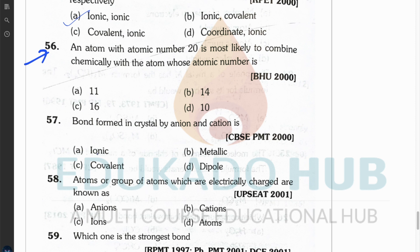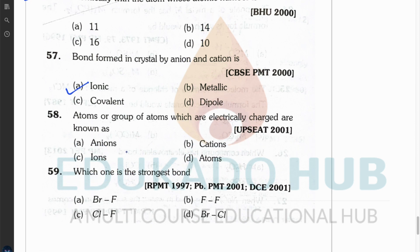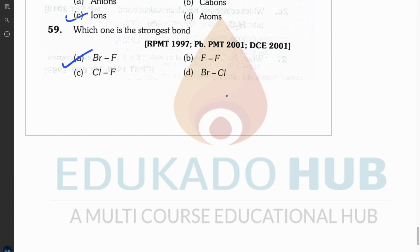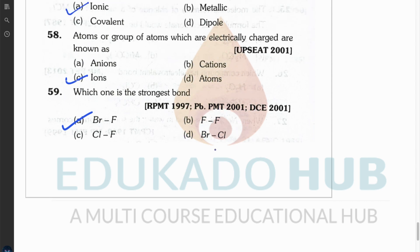Question fifty-seven: bond formed in a crystal between cation and anion — you know the answer. Question fifty-eight: atoms or groups of atoms that are electrically charged are known as ions. Question fifty-nine: which bond is strongest? The answer is the bromine-fluorine bond, because bromine and fluorine have the maximum electronegativity difference compared to the other options. There is no electronegativity difference in F₂ (both are the same element), and BrCl has less difference than BrF.